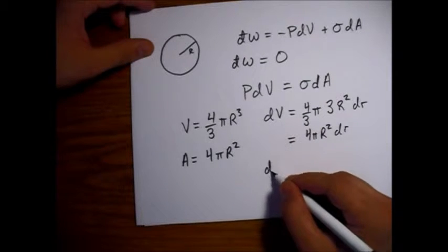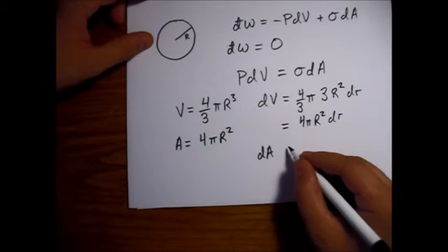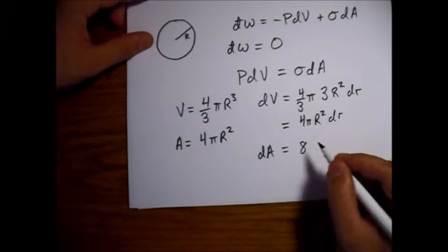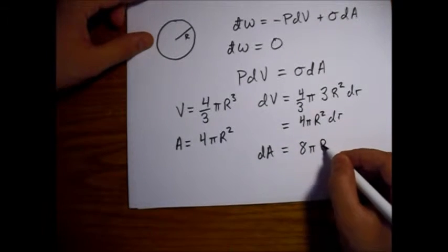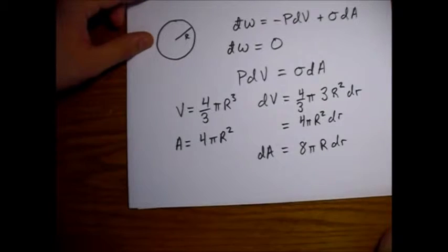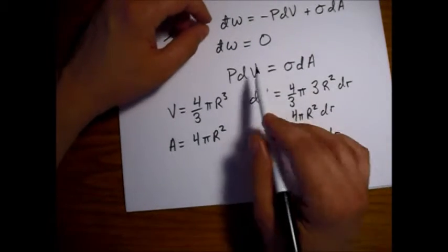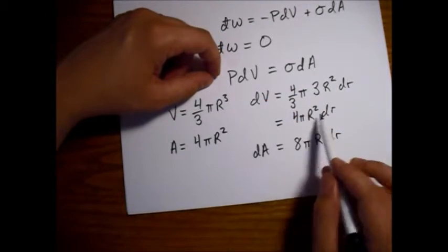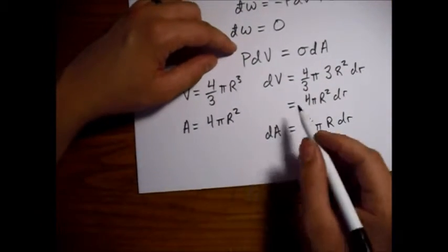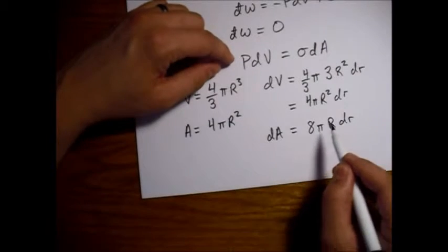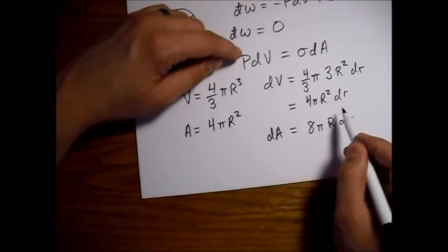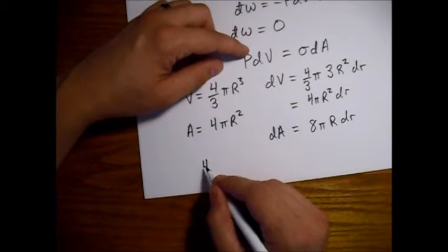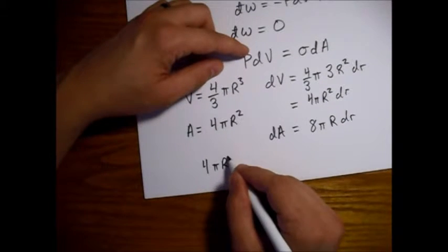Now the area, we go ahead and do the same sort of thing we'll get an eight pi r dr. So now taking our equation up here and just plugging in these two pieces, now we'll see what we get.